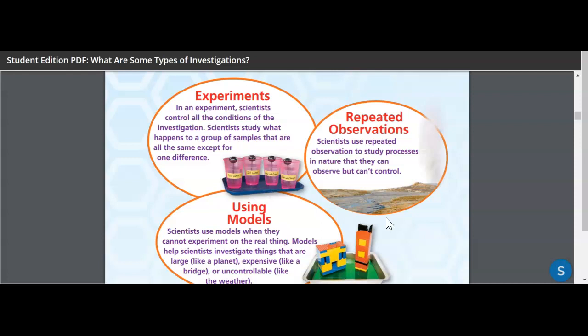And you get these bubbles up here and they talk about experiments, repeated observations and using models. So experiments. In an experiment, scientists control all the conditions. Think back to our bubble mania. We had a controlled experiment. I was able to control the different brands of soap. I controlled the water. I controlled the specific way I stirred the bubbles, the bubble water mixture. Scientists study what happens to a group of samples that are all the same, except for one difference. So you're changing one thing to see if something happens in response to that change. But it's all very planned out. It's all very specifically designed.